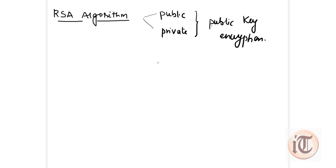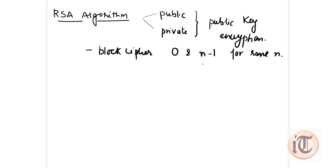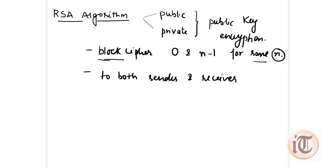The RSA scheme is a block cipher in which the plaintext and ciphertext are integers between 0 and n minus 1, for some n. This means that plaintext is encrypted in blocks, with each block having a binary value less than some number n. The plaintext as well as the ciphertext are encrypted and decrypted in block form. This value n must be known to both the sender and the receiver.